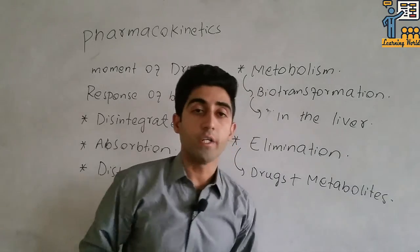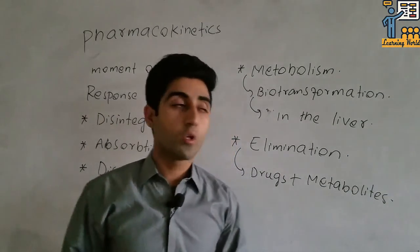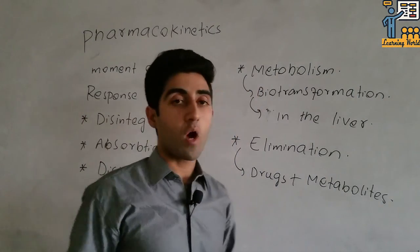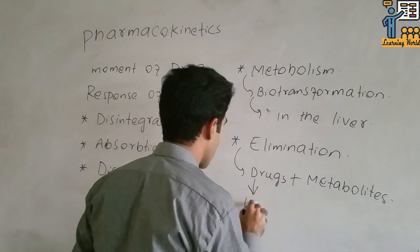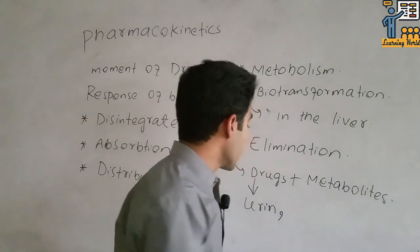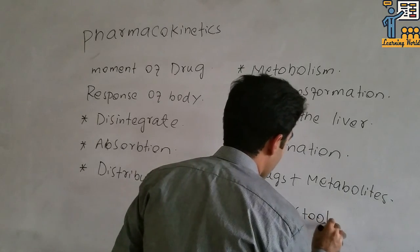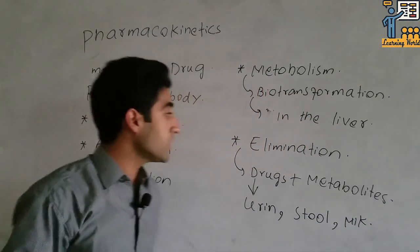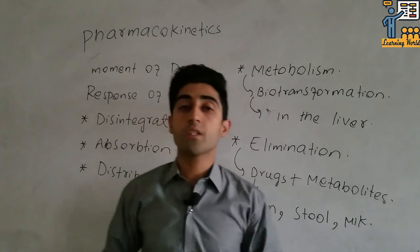The drugs and their metabolites are excreted from the body through different routes — through urine, through stool. This depends on their solubility: if they are soluble in water, they are eliminated from the body through urine; if they are fat soluble, they are excreted through stool or milk. That's all about the different processes.